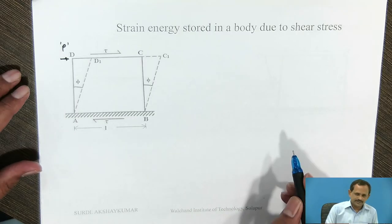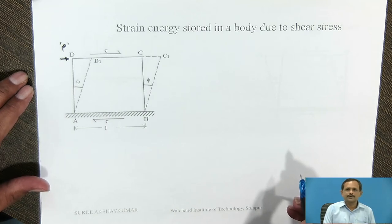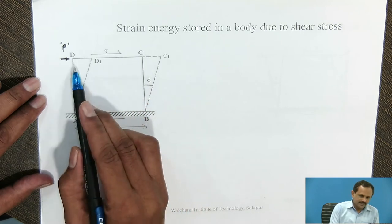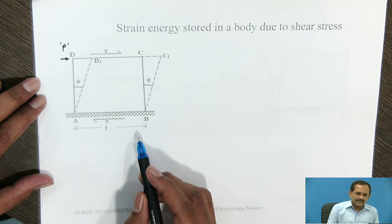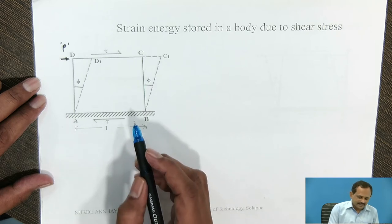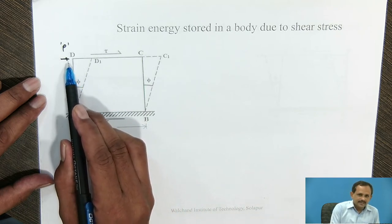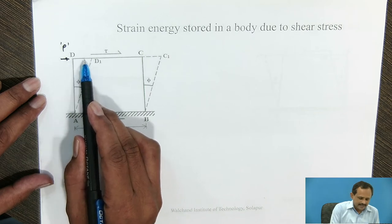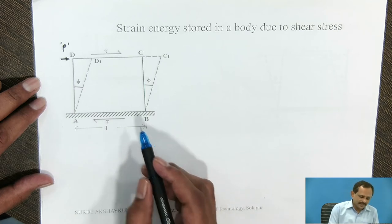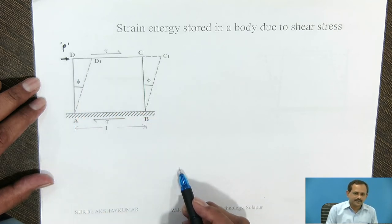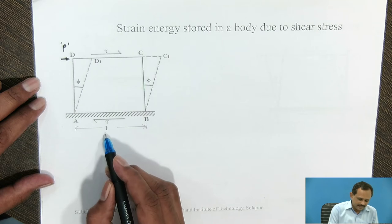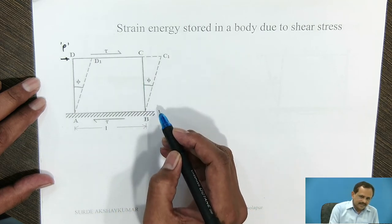Strain energy stored in a body due to shear stress. Consider a rectangular block A, B, C, D having length L, breadth B, and height H. This rectangular block is subjected to a tangential force acting along the top surface C, D, and the magnitude of the tangential force is P. The bottom face of this rectangular block is kept fixed, having length L, height H, and width B.